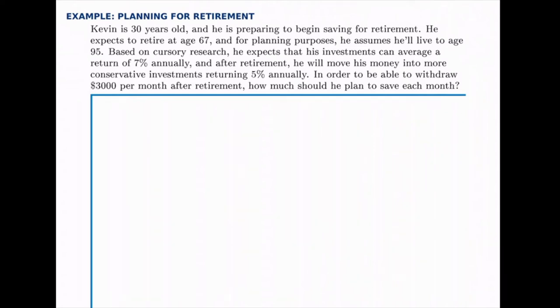In this example, we'll go through the whole process of planning for retirement. So we'll start with what someone wants to withdraw after they retire, and we'll work backwards from that all the way to figuring out how much they should start depositing now in order to save for retirement. So there'll be two stages to the problem.